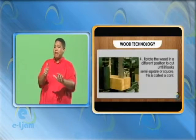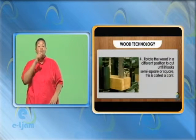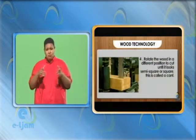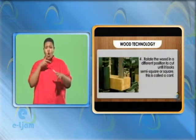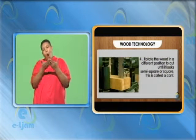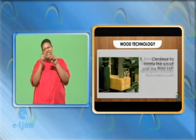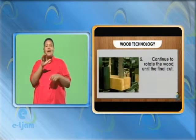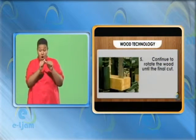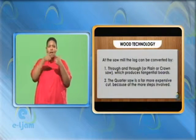4. Rotate the wood in a different position to cut until it looks semi-square or square. This is called a cant. 5. Continue to rotate the wood until the final cut.